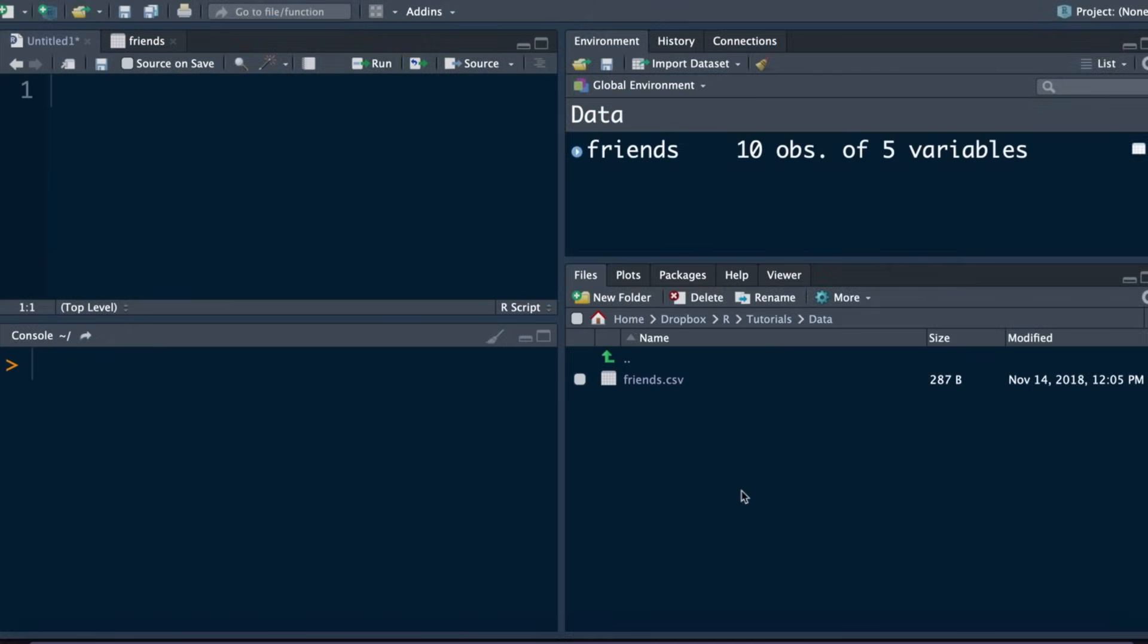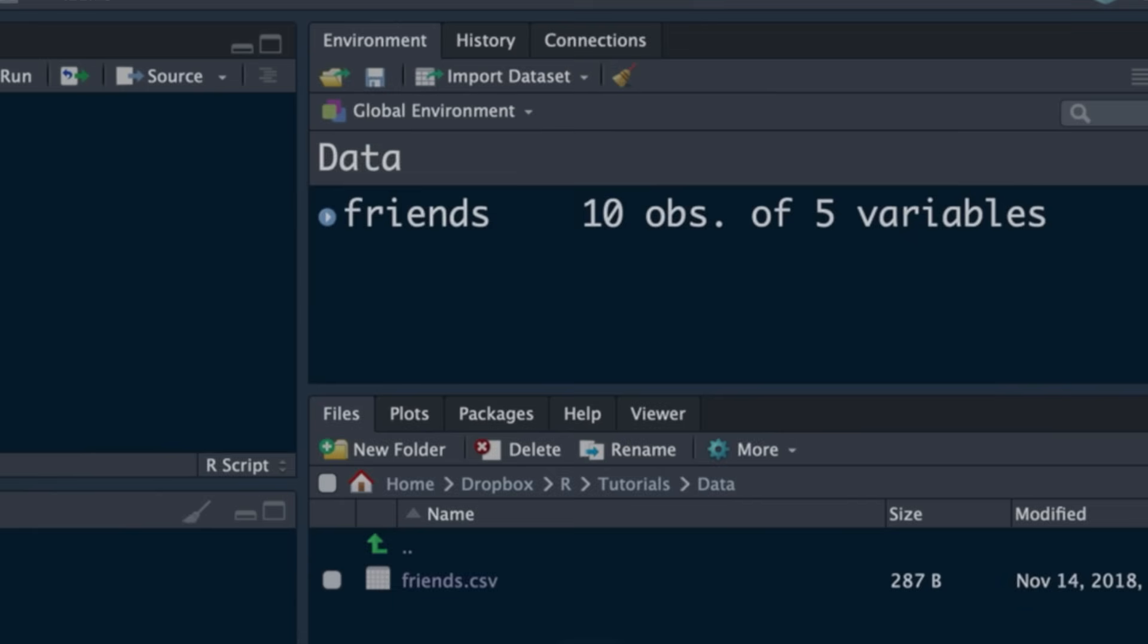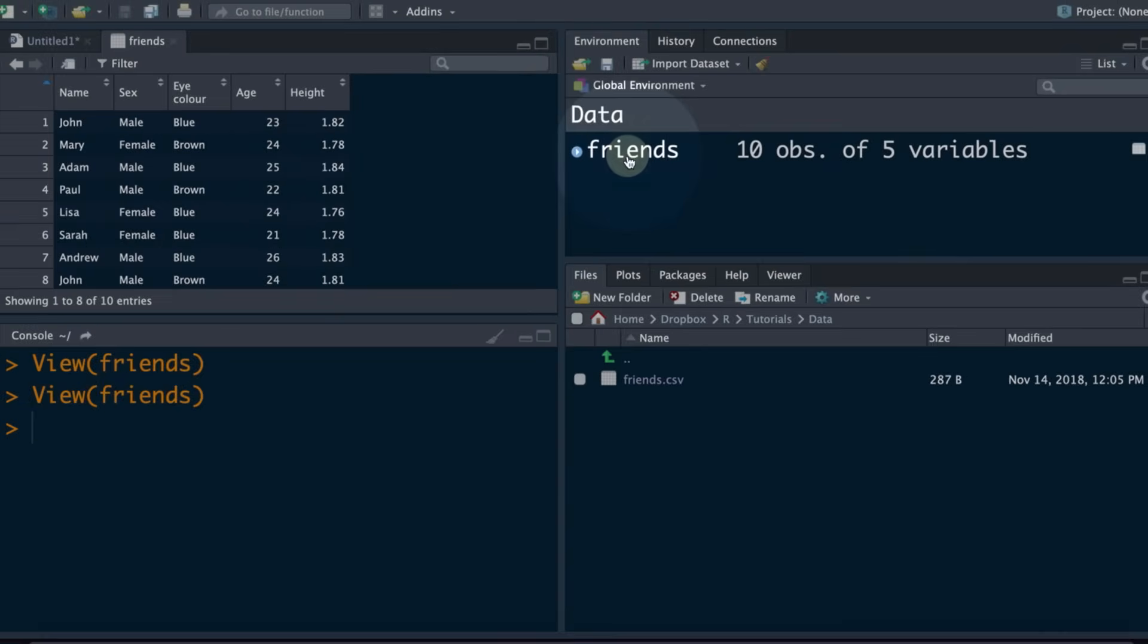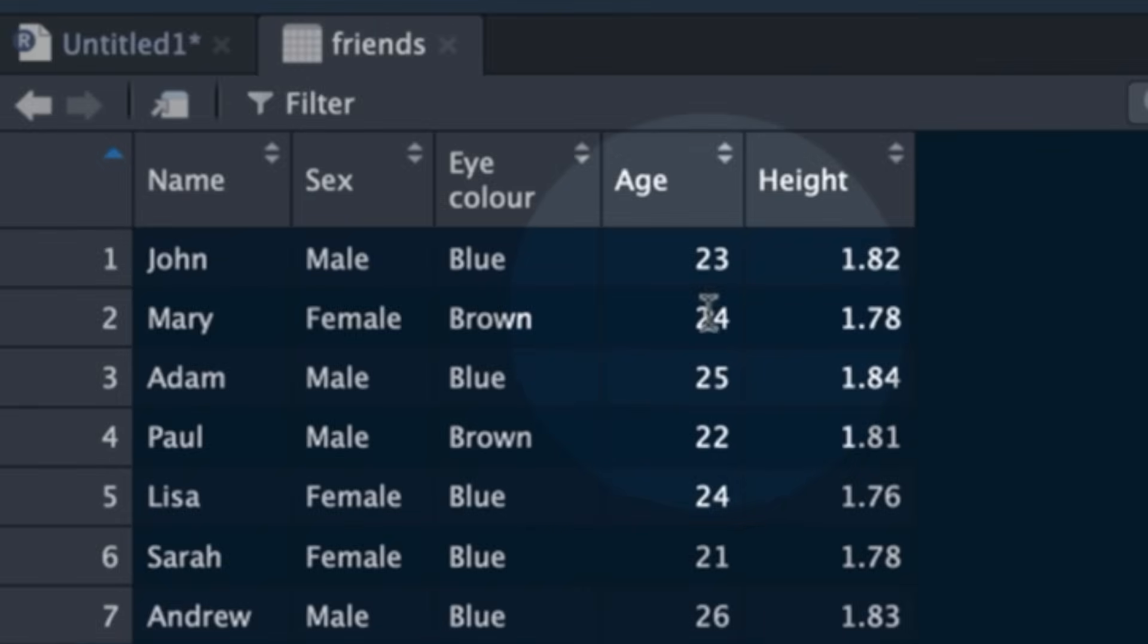So, in this particular example, I have got a little data frame called Friends. I click on that, and we can see it over here. We've got some variables and some observations. I'm looking at age and height. Let's see what we can do with those.